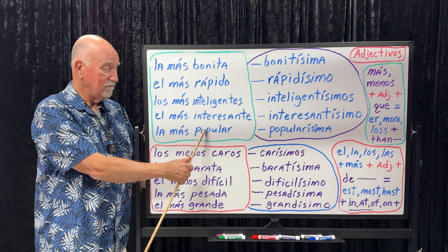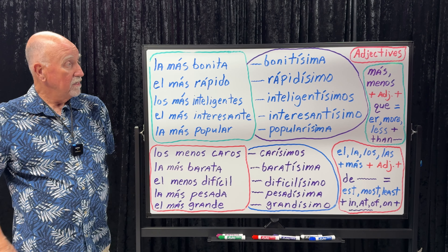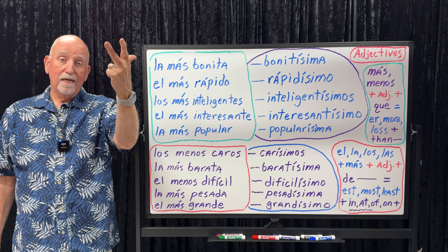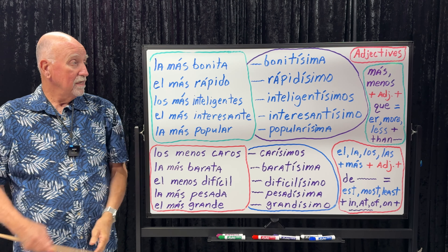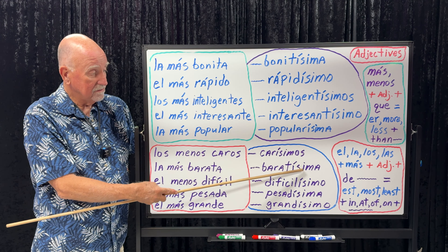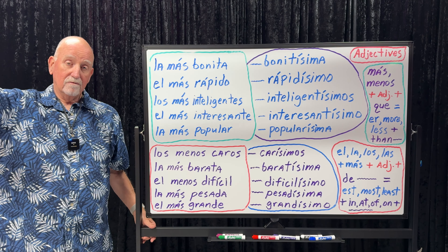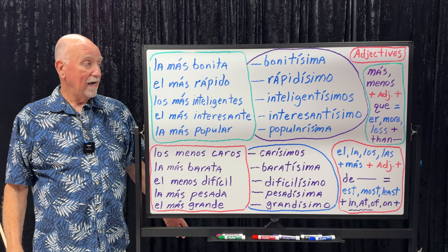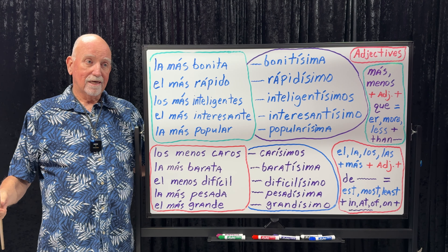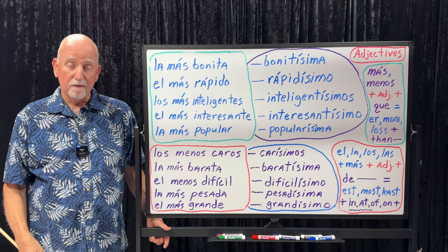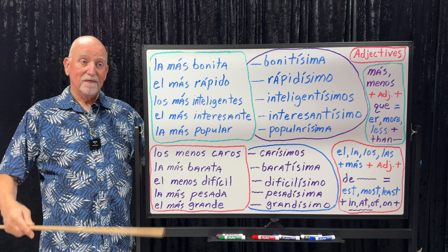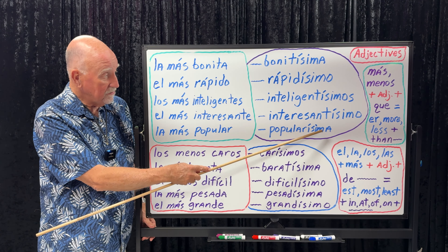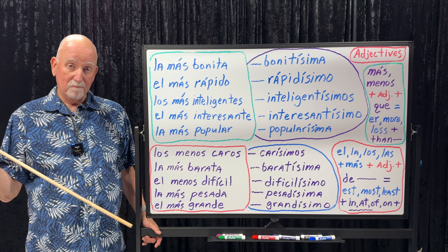So if you do the superlative, you have all three degrees of the adjective right there. Now, we have something called the absolute superlative. That gives us four things to do: alto, más alto, el más alto, or altísimo. When you put an -ísimo or -ísima ending on an adjective, you're taking it to its highest, maximum degree. Bonitísimo would be like gorgeous for a girl. Rapidísimo would be super fast for a guy. Inteligentísimos would be like brainiacs — these guys are geniuses. If something is interesantísimo, it couldn't be any more interesting — interesting to the max. Popularísima: extremely, extremely popular. Make sure your -ísimo or -ísima always agrees with what it's modifying, whether it be a person or an object.